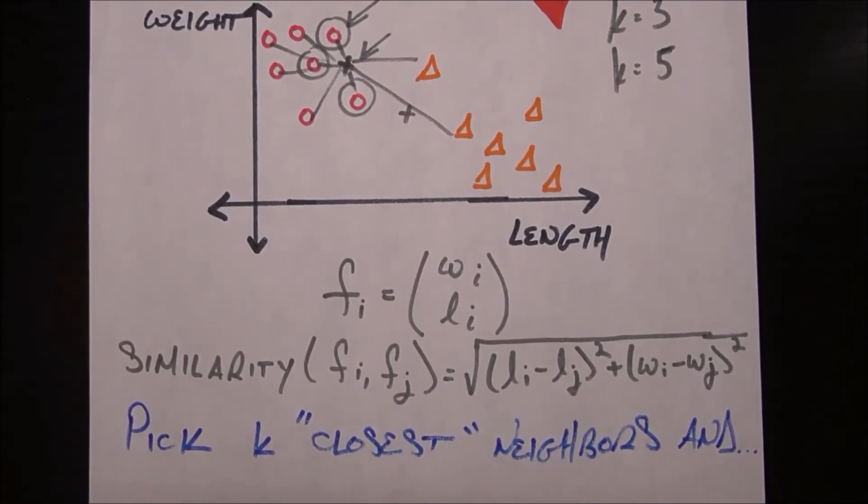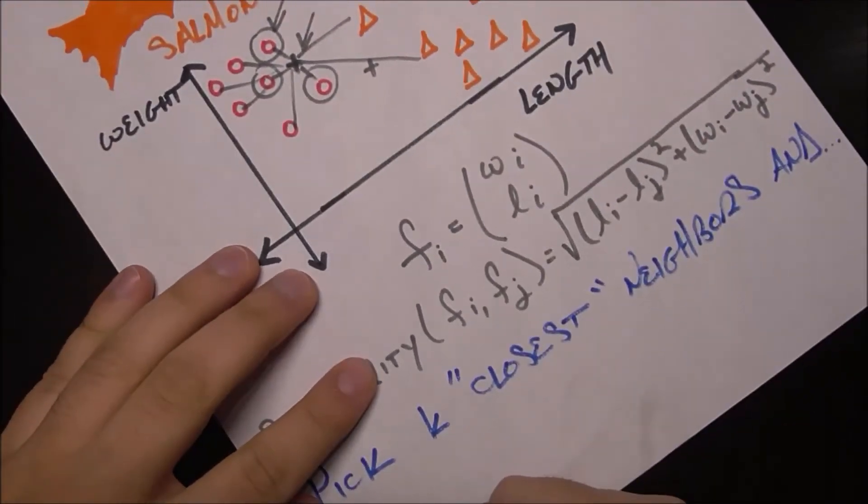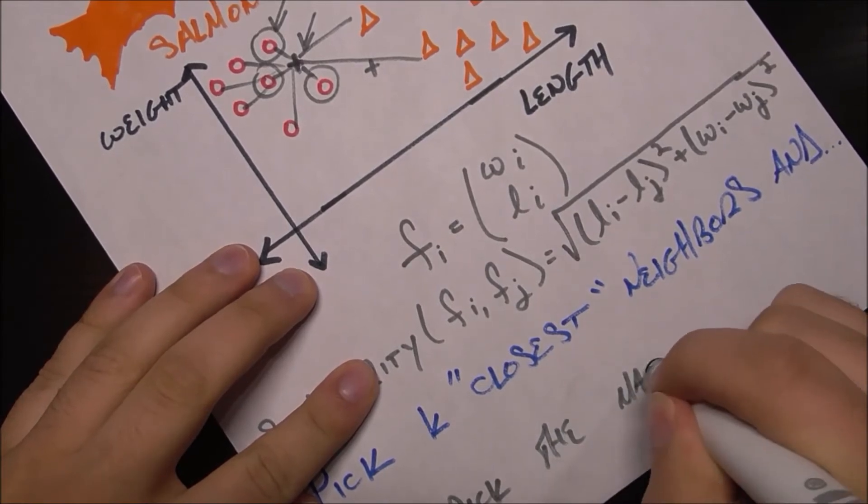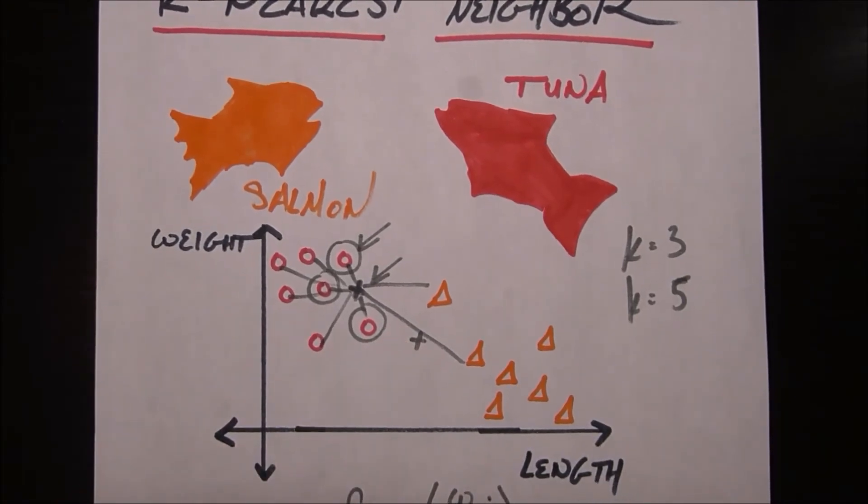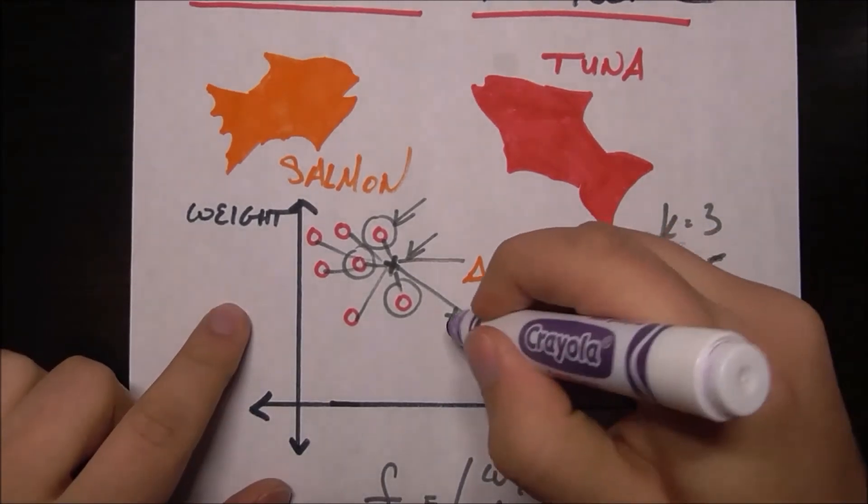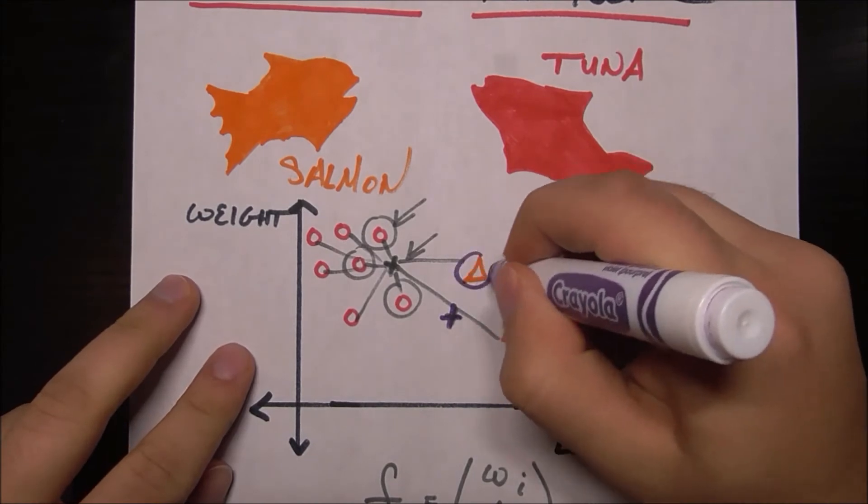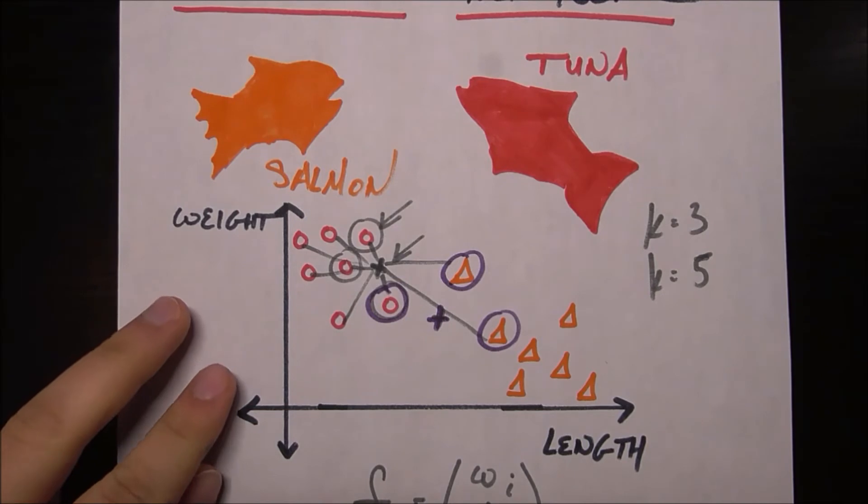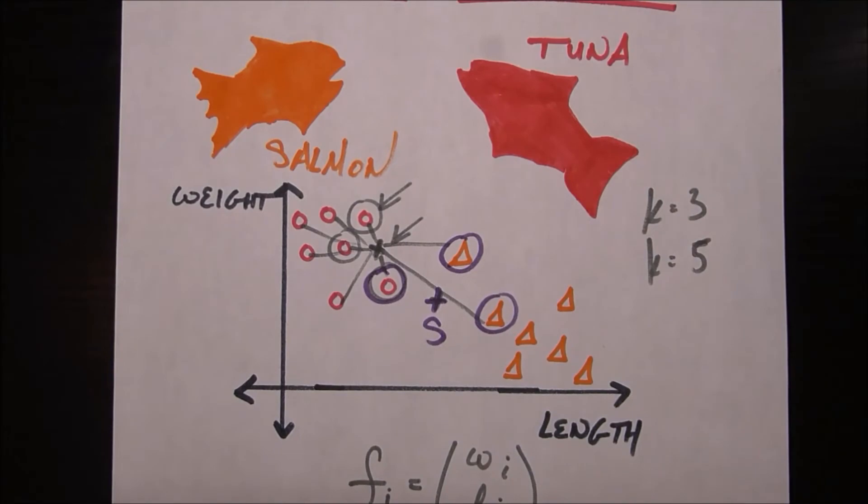So yeah, you pick your k closest neighbors and you pick the majority. That becomes a little more interesting when we consider this x right here, this mystery fish. If I have this mystery fish here and I pick k equals three, who are your three closest neighbors? It's this salmon, this salmon, and this tuna. So in this case we have a majority ruling in terms of salmon, so we assign this guy as a salmon. That's how k-nearest neighbor works.